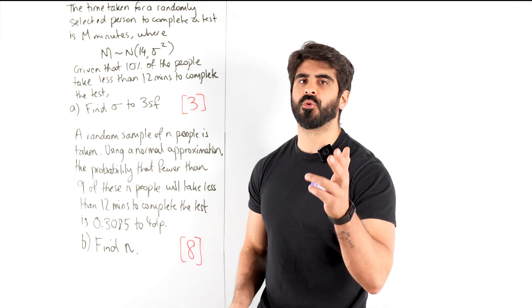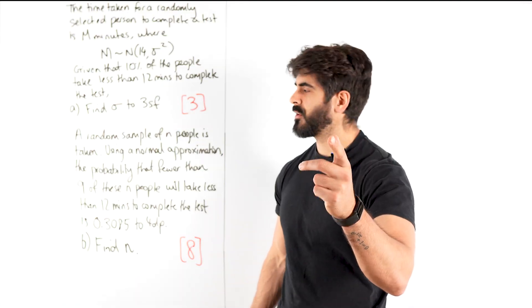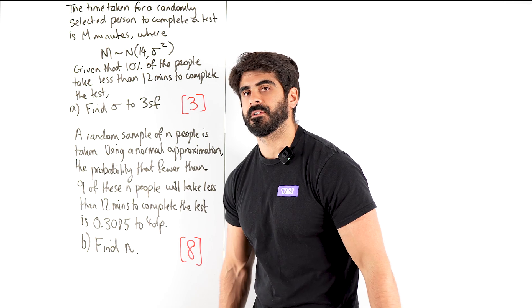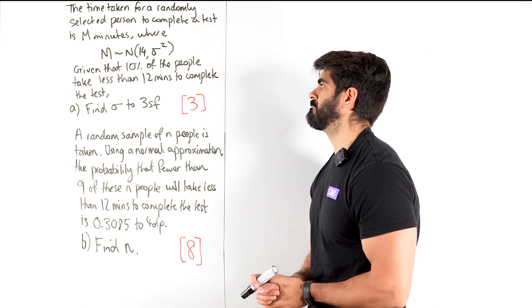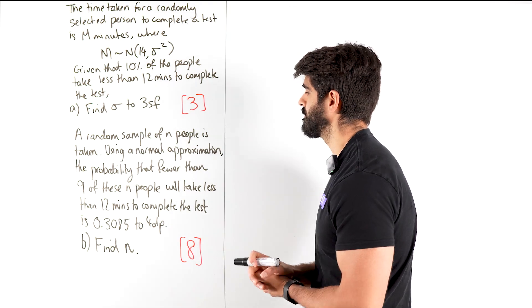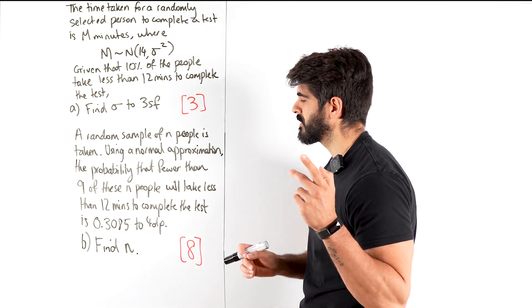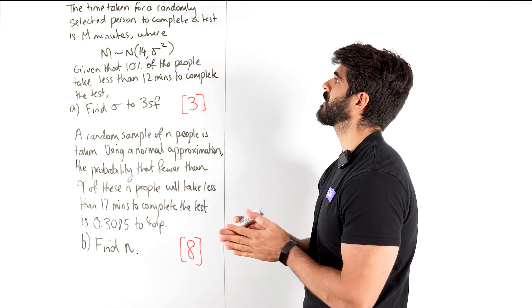Binomial and normal approximation. Stuff on steroids. Got an 11 mark question here. Let's go for it. This is a crazy one. You don't want to miss this one. You're going to want to save this video so you don't forget about it.